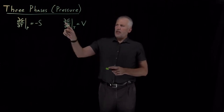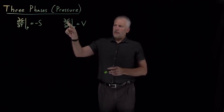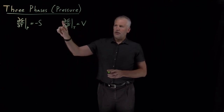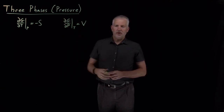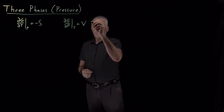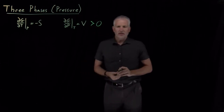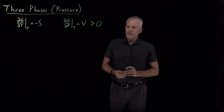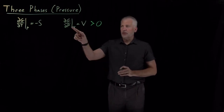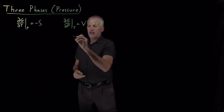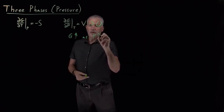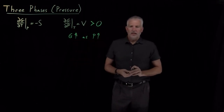If we first think about how free energy depends on pressure, we have this fundamental derivative: the derivative of the free energy with respect to pressure at constant temperature is the volume. We know the volume is always positive — nothing can have a negative volume, can't take up negative space — so that slope is always positive. The free energy will always increase as the pressure increases if we do it at constant temperature.